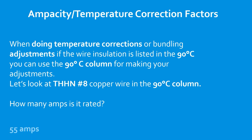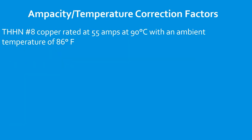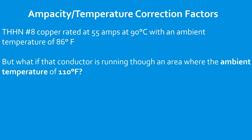So how many amps is it rated for? Number eight copper in the 90°C column is rated for 55 amps. In the 75°C column it's rated for 50 amps, and in the 60°C column it's rated for 40 amps. You'll understand why it's important that the codebook allows us to use the 90°C column before making temperature corrections or bundling adjustments. THHN number eight copper is rated for 55 amps in the 90°C column, but only with an ambient temperature of 86°F.